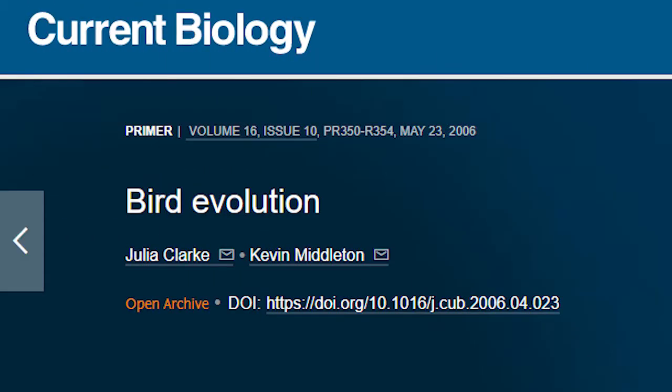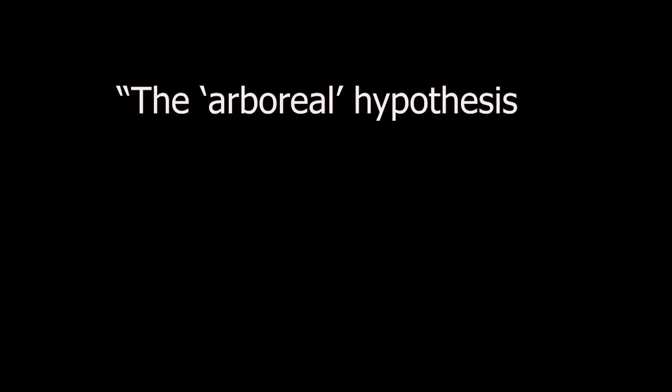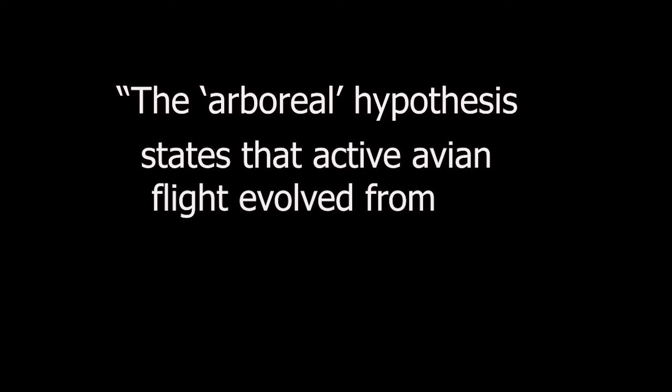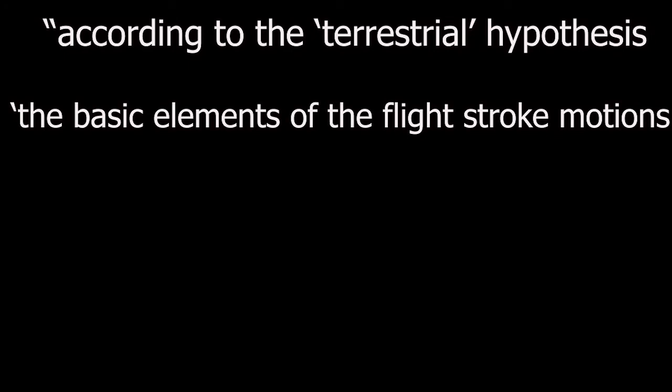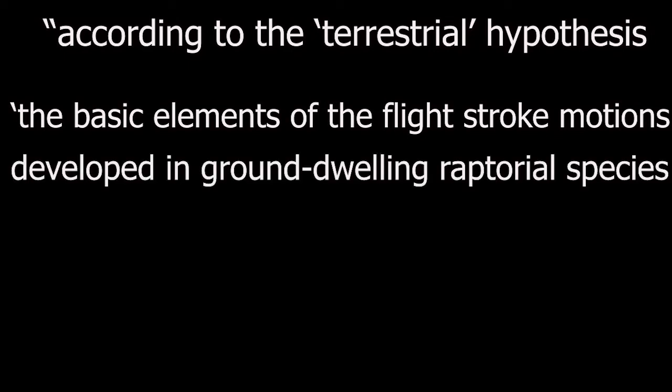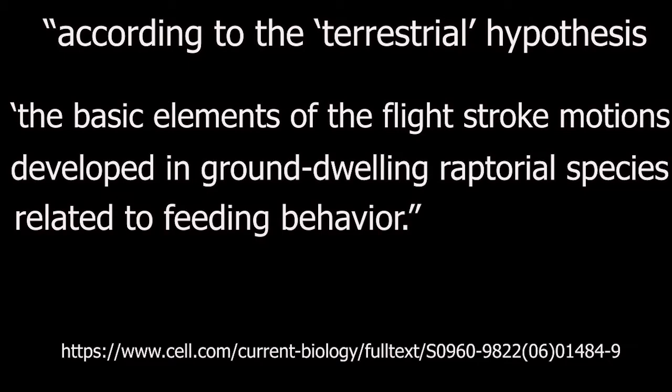This paper presents two hypotheses about bird evolution. The Archaeopteryx hypothesis states that active avian flight evolved from the trees down through an intermittent gliding stage, whereas according to the terrestrial hypothesis, the basic elements of the flight stroke motions developed in ground-dwelling raptor species related to feeding behavior.